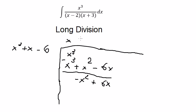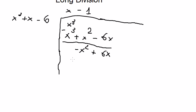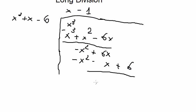For this one, we got negative 1. Negative 1 multiplied with this expression gives us negative x squared, negative x, and positive 6. So after subtracting, we have 7x minus 6.